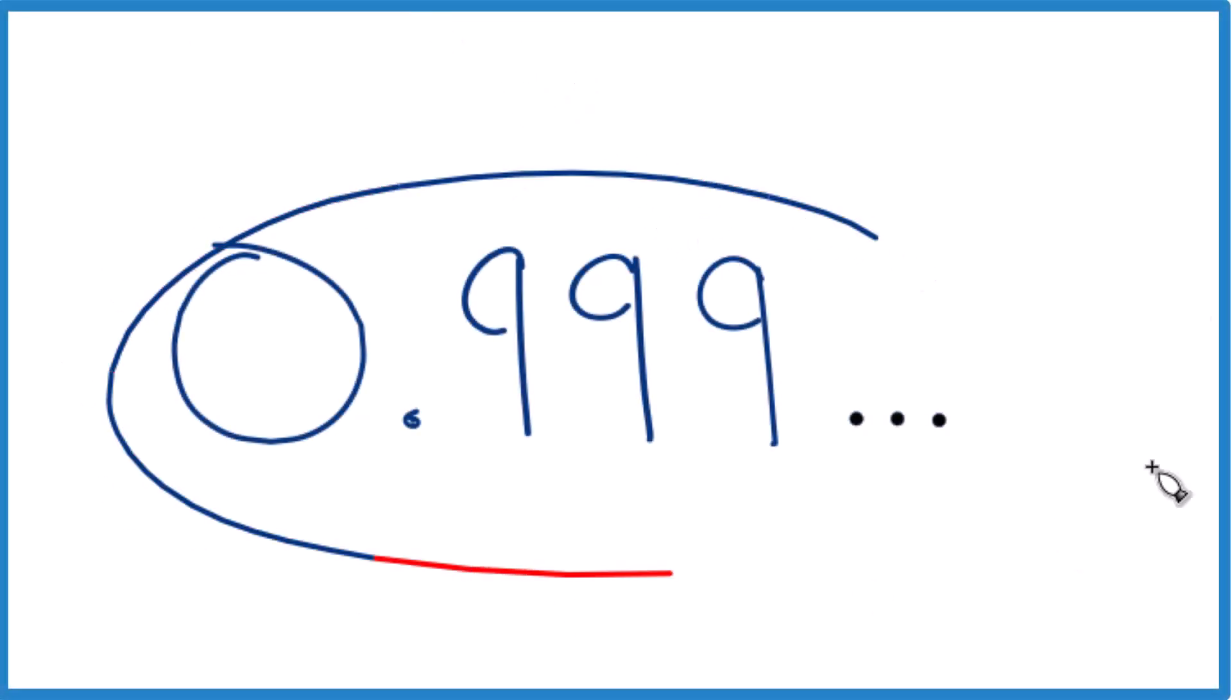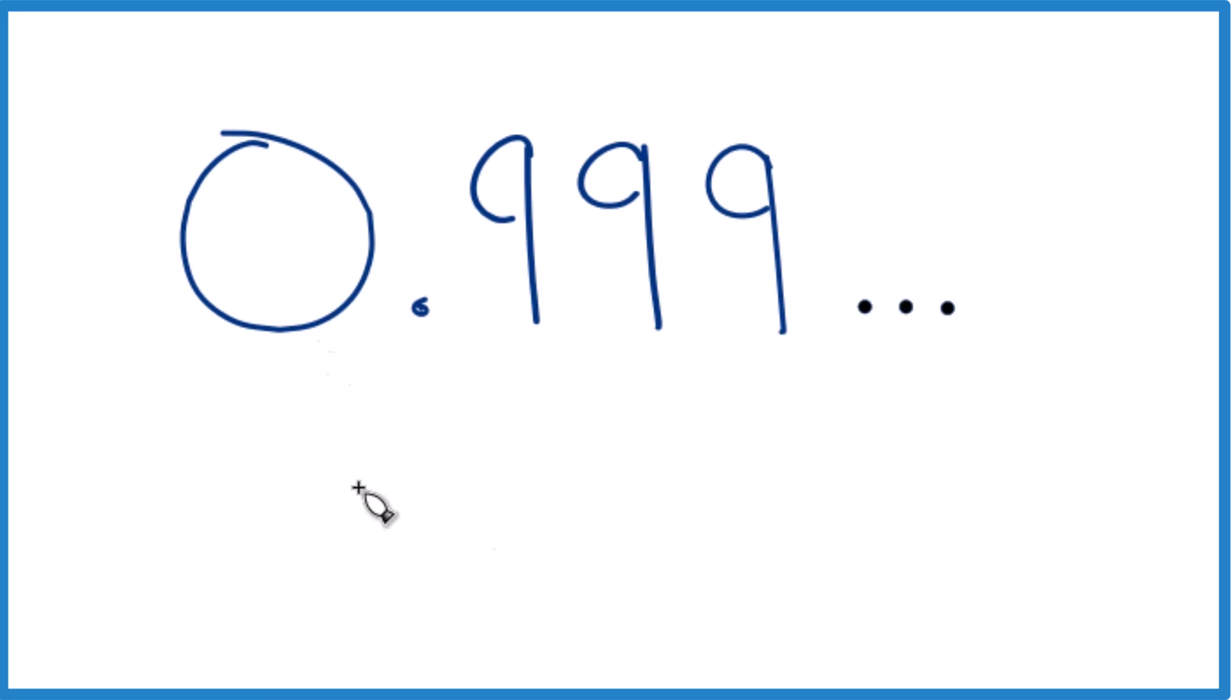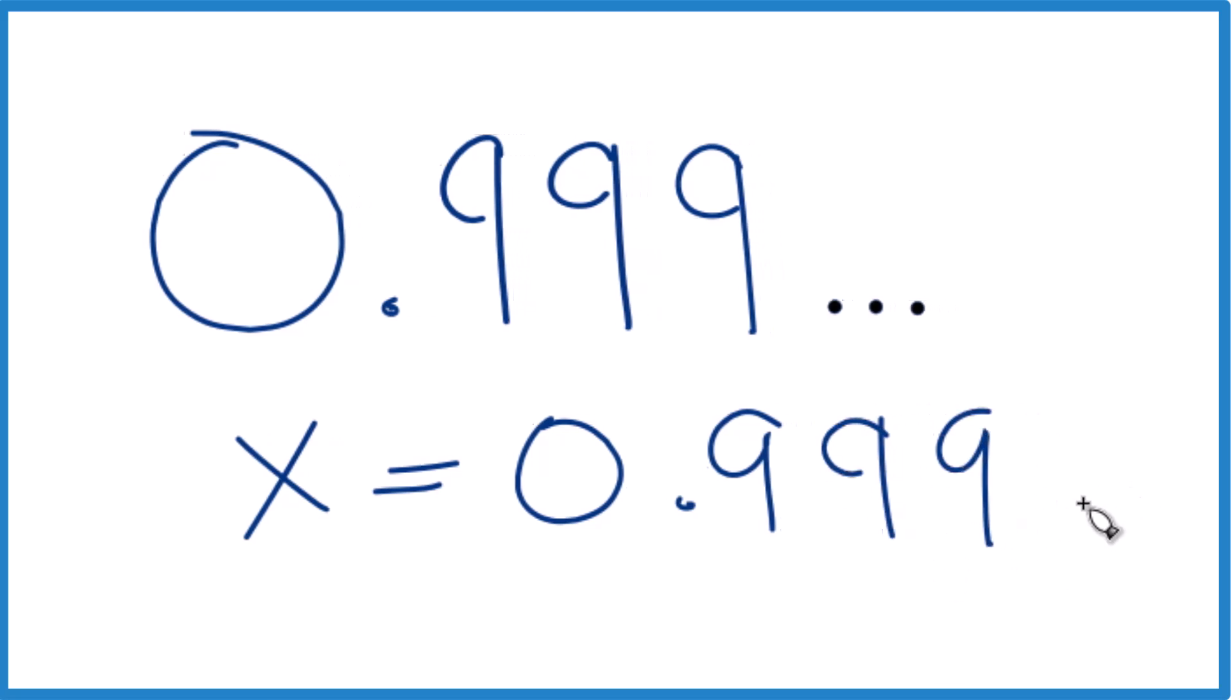So if you're given 0.999, that 9 keeps repeating, this decimal here, how do you get that to a fraction? So this is one way you can do it. You could take and say x equals 0.999 repeating here.